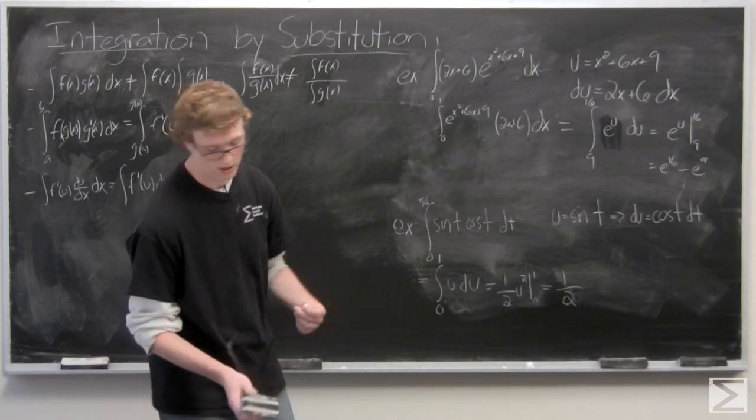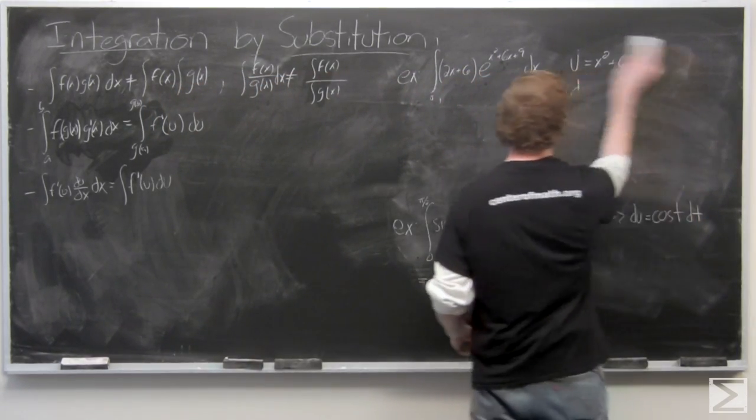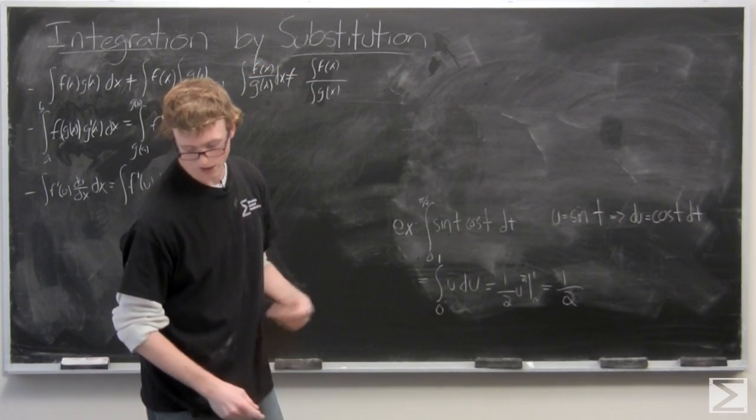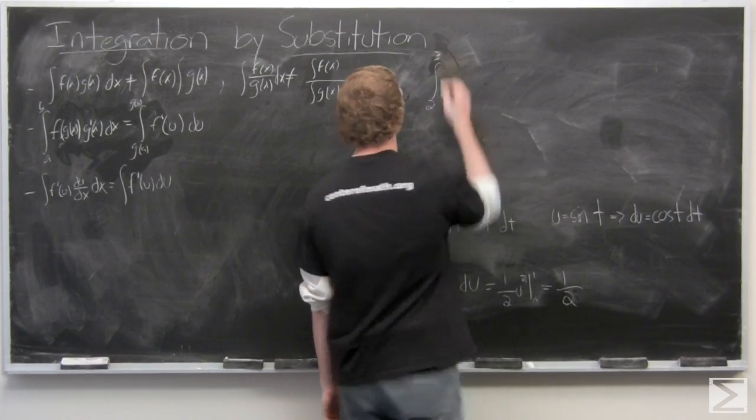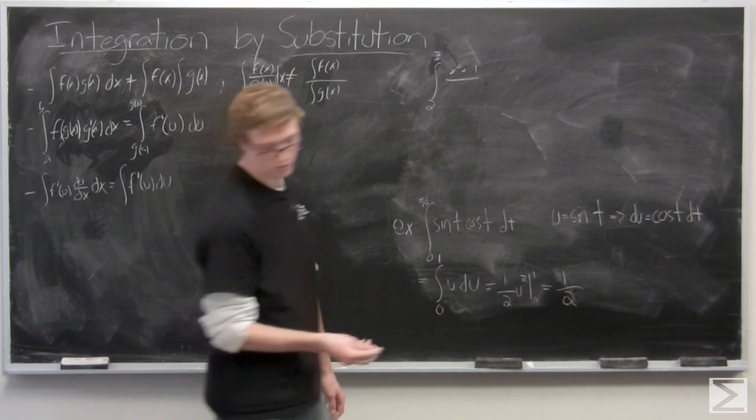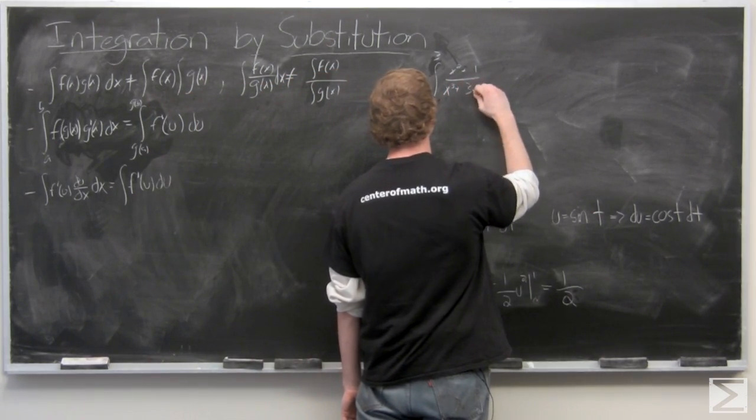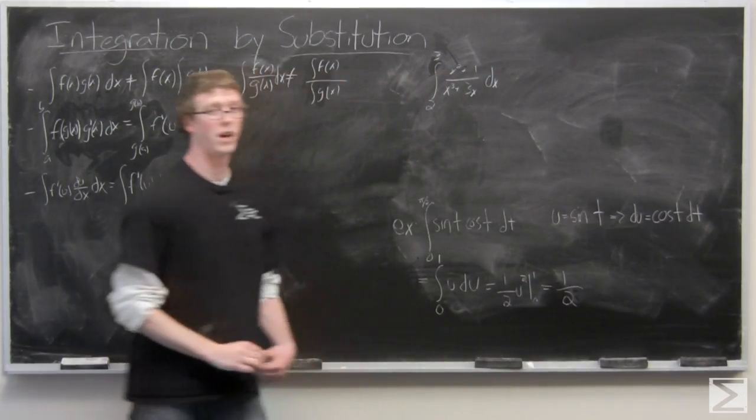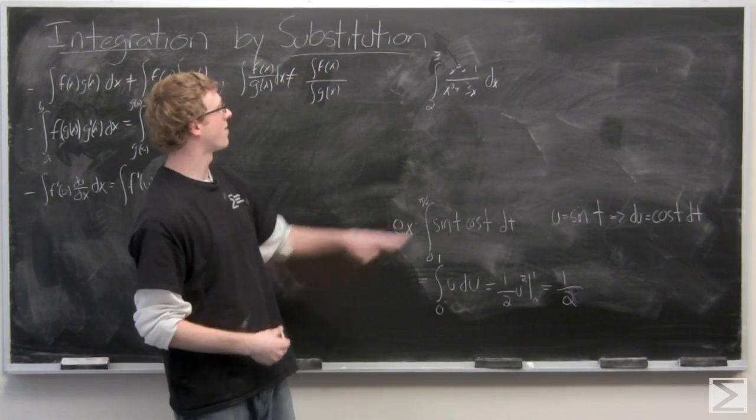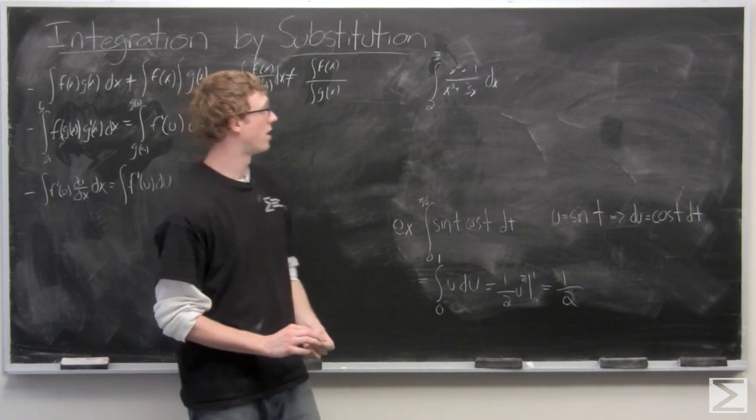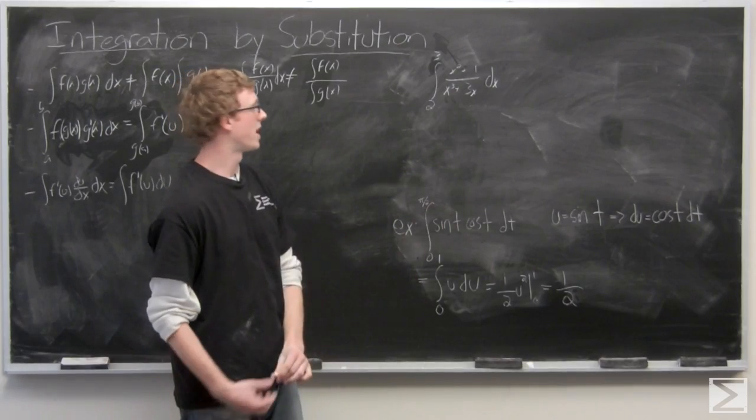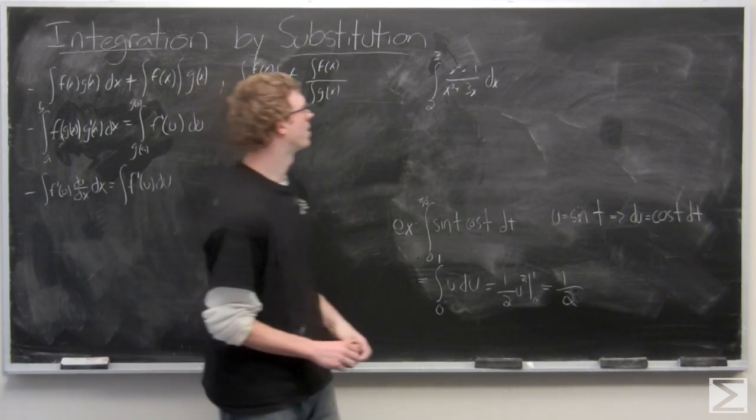So, last we're going to take a look at an example with a fraction. We have the function integrated from 2 to 3, all over x cubed plus 3x. Now, we want to examine this function and decide what it would be best to substitute u in for. So, we have a higher power in the denominator. So, it looks like we're going to want to set u equal to some sort of term with x cubed and 3x in order to get du with terms of x squared and 1. So, we set u, let's just go ahead and set u equal to x cubed plus 3x.